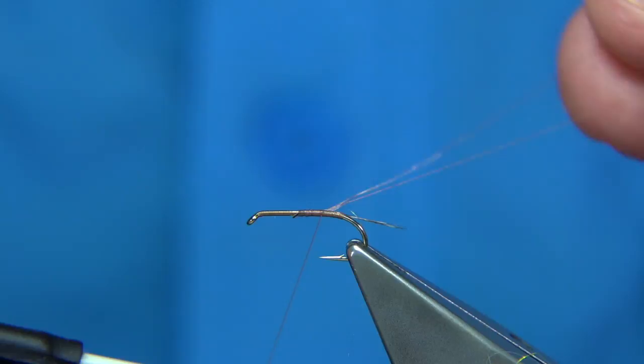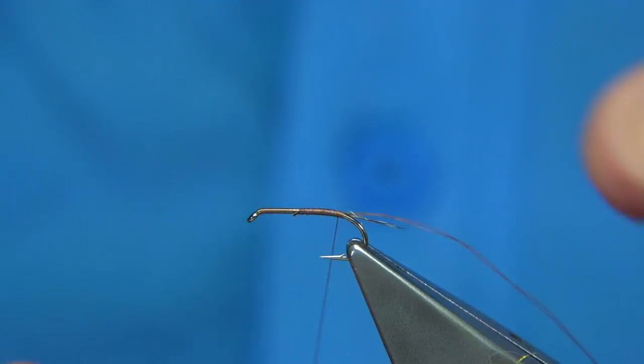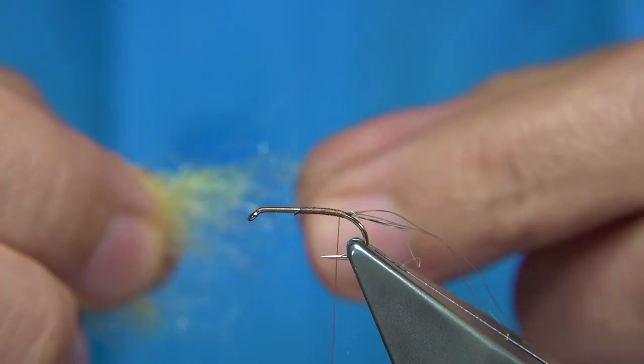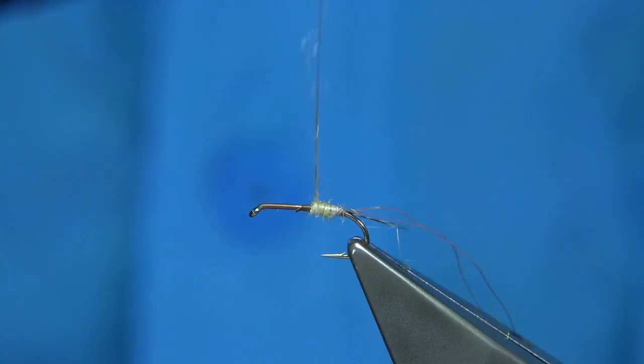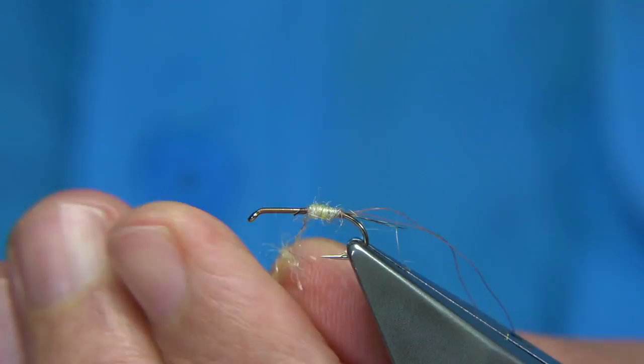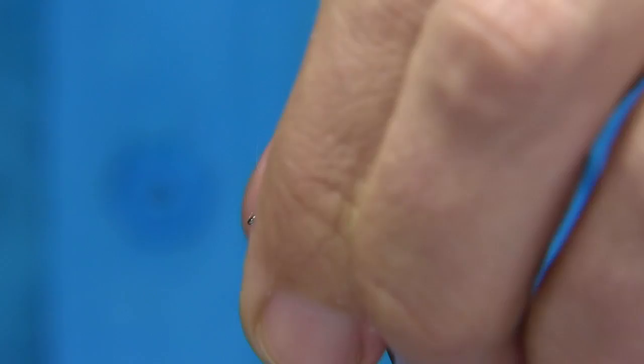Now, the first, say a mil or so, I'll just keep the thread color and get my dubbing. Just lightly dub it onto the thread, slide it up. Carrot shaped body. Just work your way up to this point here, two thirds of the way up,